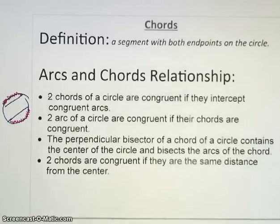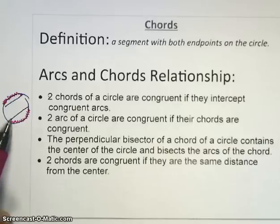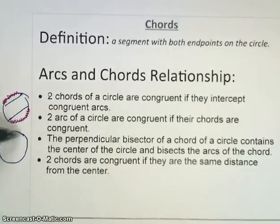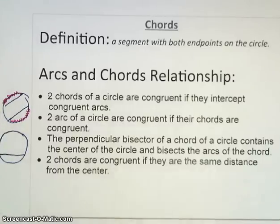The second theorem is the reverse of that. So, if the arcs are congruent, then we know the chords must be congruent. The third theorem talks about a perpendicular bisector of a chord, and it will always contain the center of the circle, and it will bisect the arc. So, a perpendicular bisector here, again, we'll cut this in half, make this a right angle, and it will go through the center of the circle. And lastly, these arcs are going to be congruent to each other.